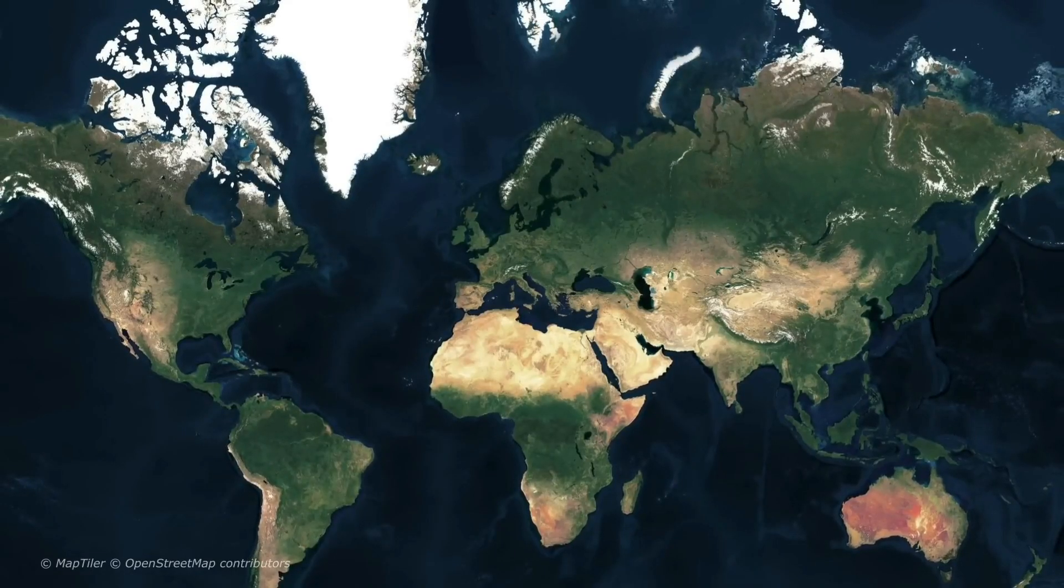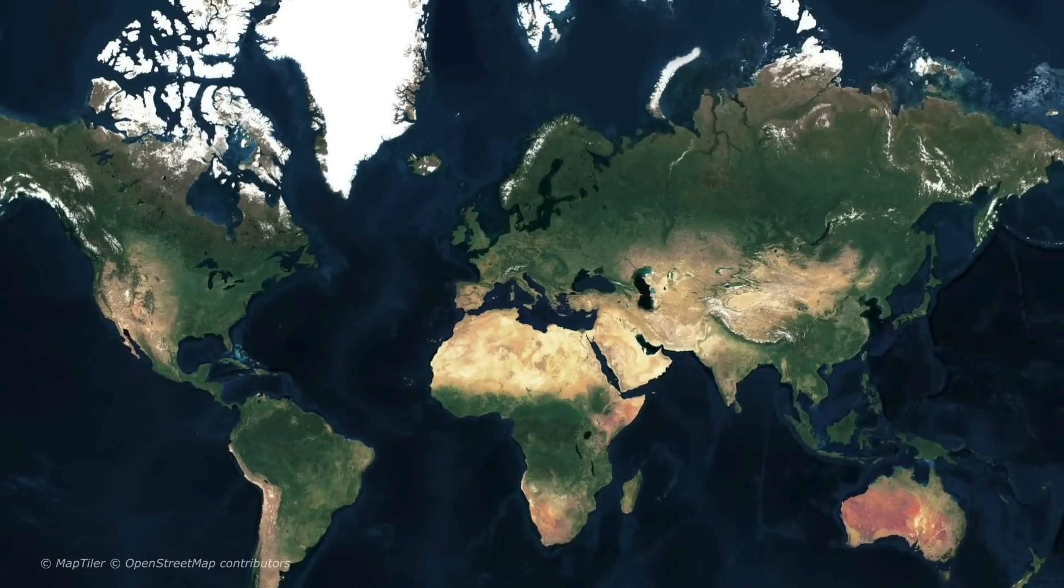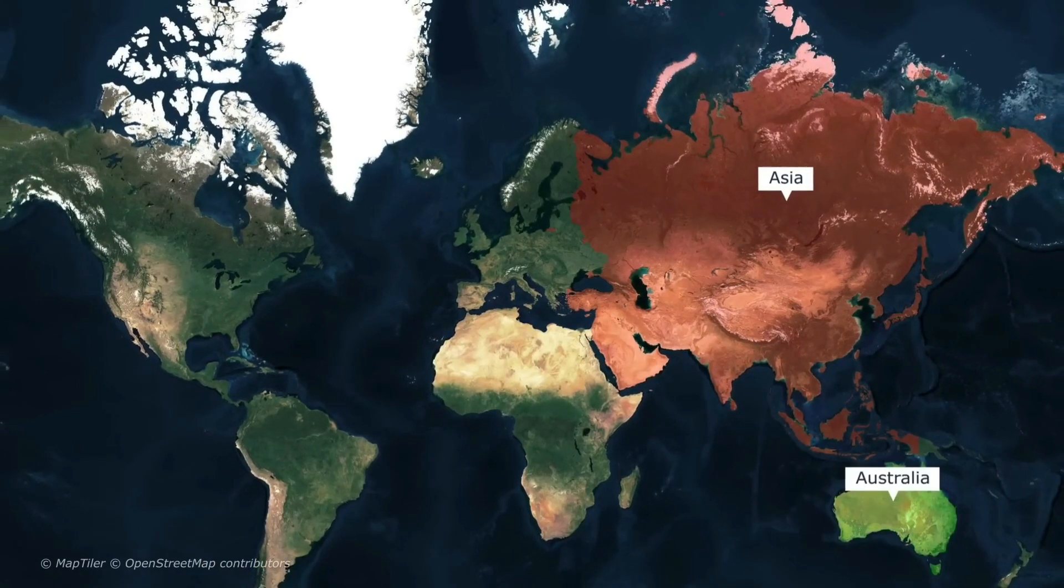When you look at the world map, you can see the seven continents, including Asia, Australia, North and South America, and Africa.